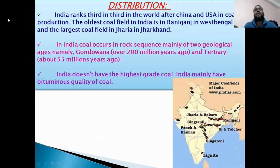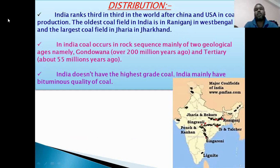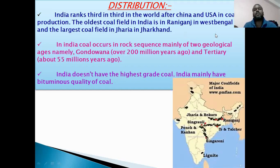India ranks third in the world after China and USA in coal production. The oldest coal field in India is in Raniganj in West Bengal, and the largest coal field is located in Jharia in Jharkhand. In India, coal occurs in rock sequences mainly of two geological ages: Gondwana coal fields, formed over 200 million years ago, and tertiary coal fields, formed about 55 million years ago. India does not have the highest grade of coal and mainly has bituminous quality.